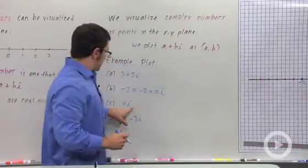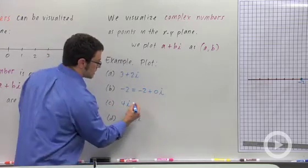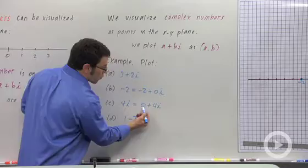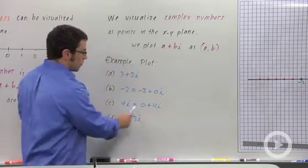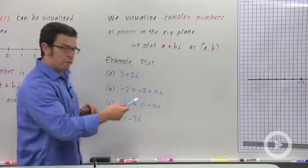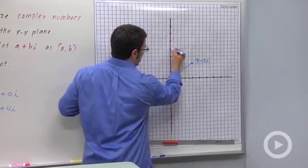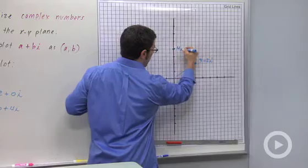Now, let's take a look at another example, 4i. This can be written in the form 0 plus 4i. So the real part is 0. When we plot this, we plot it as (0, 4). 0, 4 would be 1, 2, 3, 4 here. So this is 4i.